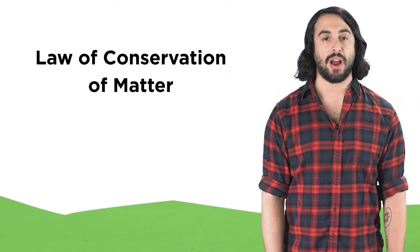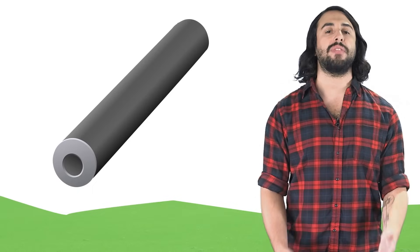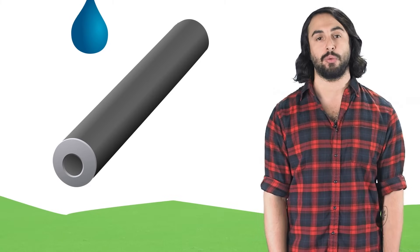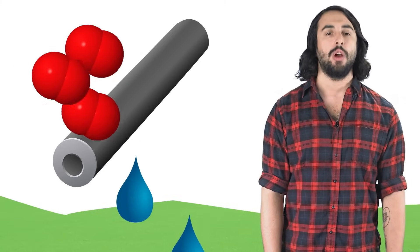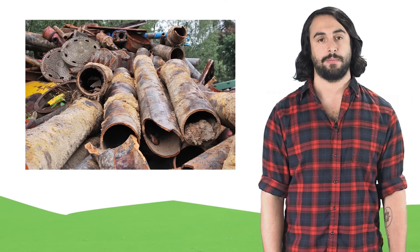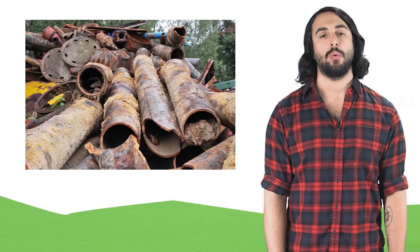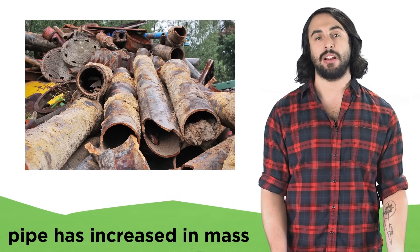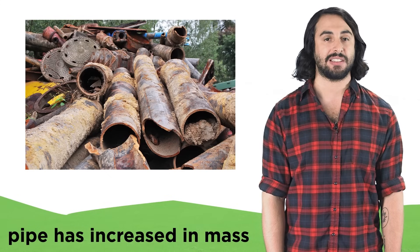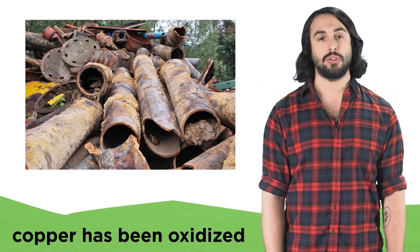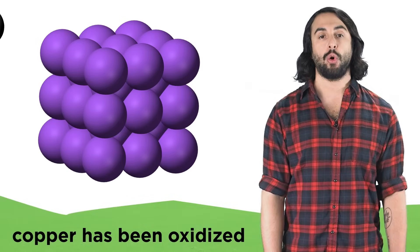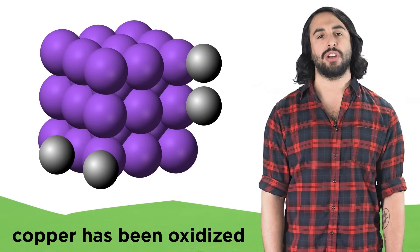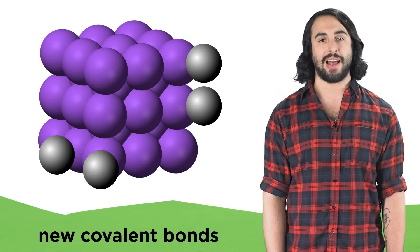Let's imagine some other processes that can demonstrate this law. Think of a copper pipe. If we leave this pipe to the outdoor elements, where it will come into contact with water from the rain and oxygen from the atmosphere, we know that this pipe will rust. And as a result, the rusty pipe will have more mass than it did originally. So we may at first think that matter has appeared out of nowhere to give the pipe more mass, but in actuality, the rust is due to the oxidation of the pipe, or the reaction with oxygen molecules in the atmosphere. This means that oxygen atoms will covalently bond to the copper atoms in the pipe.